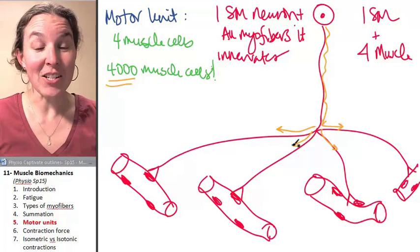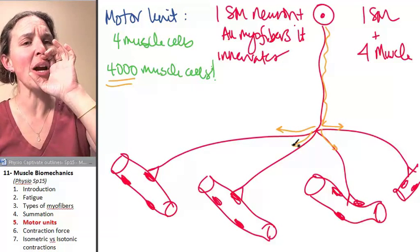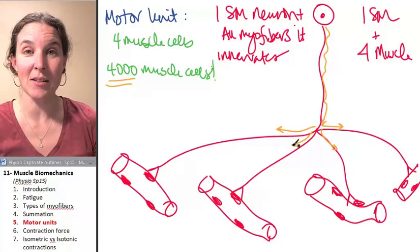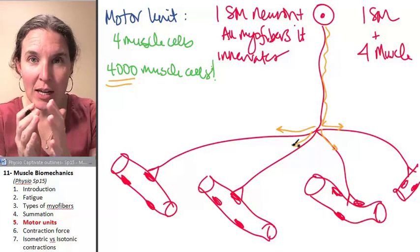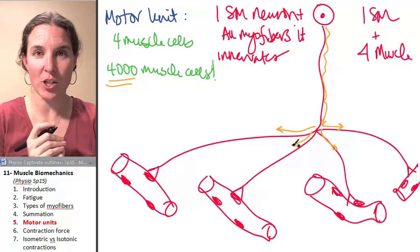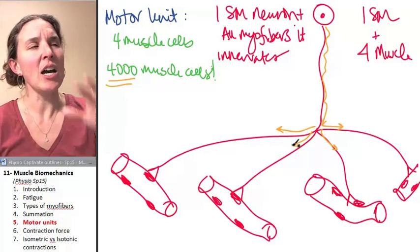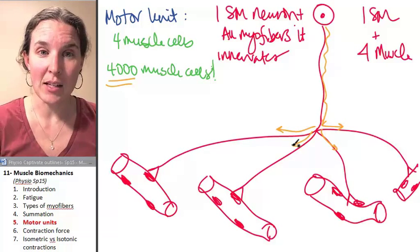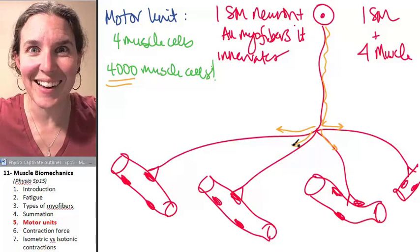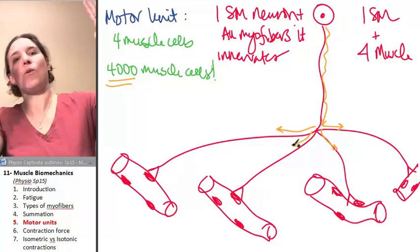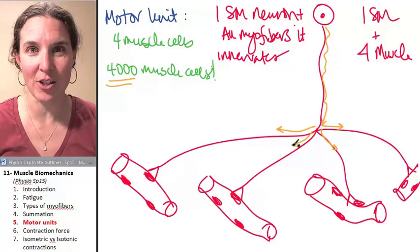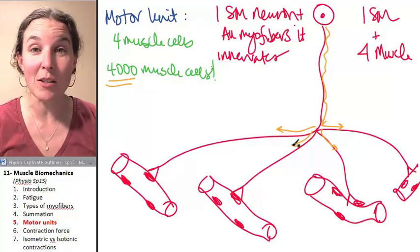You can imagine that if I send a message, contract, fellas, to four muscle cells, I'm going to get a nice little fine contraction. If I send a contract, fellas, message to 4,000 muscle cells, I'm going to get this, like, whoa, that was a huge contraction. There was a huge muscle movement.